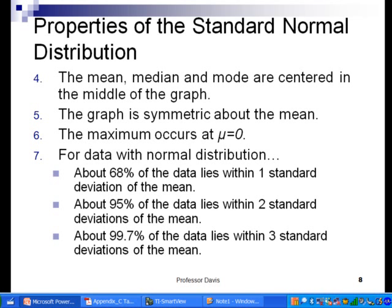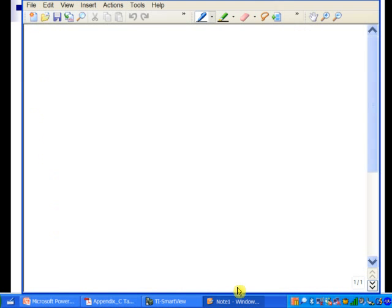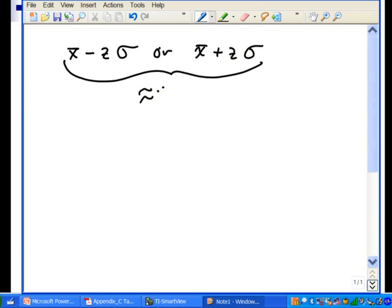For the standard normal curve z and for data that has a normal distribution, notice here what we can say: about 68 percent of the data lies within one standard deviation of the mean. We're saying if we take some value minus z times its standard deviation or some value plus z times the standard deviation, this would encompass about 68 percent of the normal curve. That would go from minus a standard deviation to plus a standard deviation.